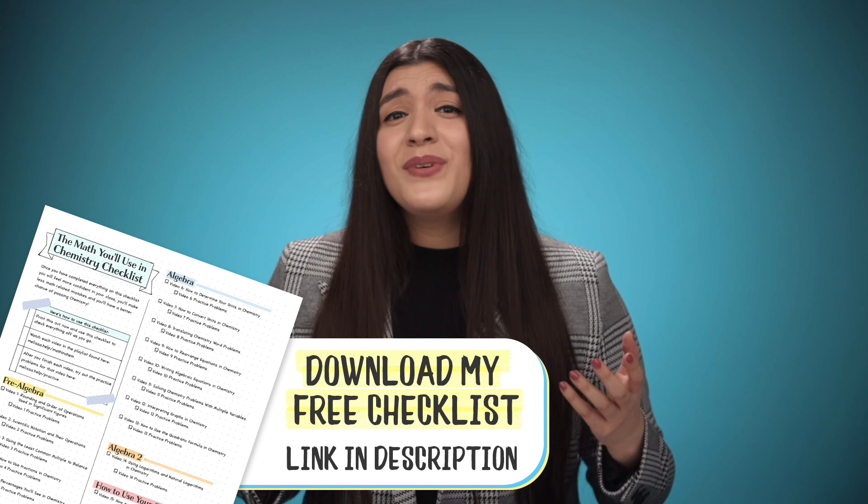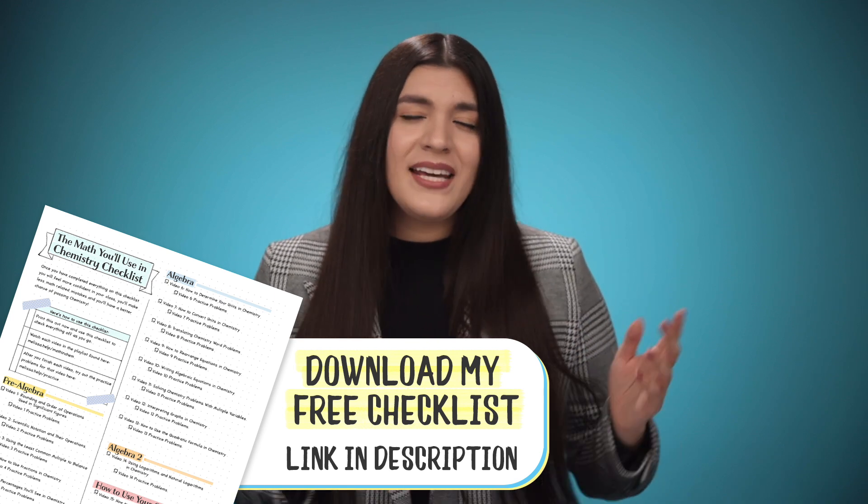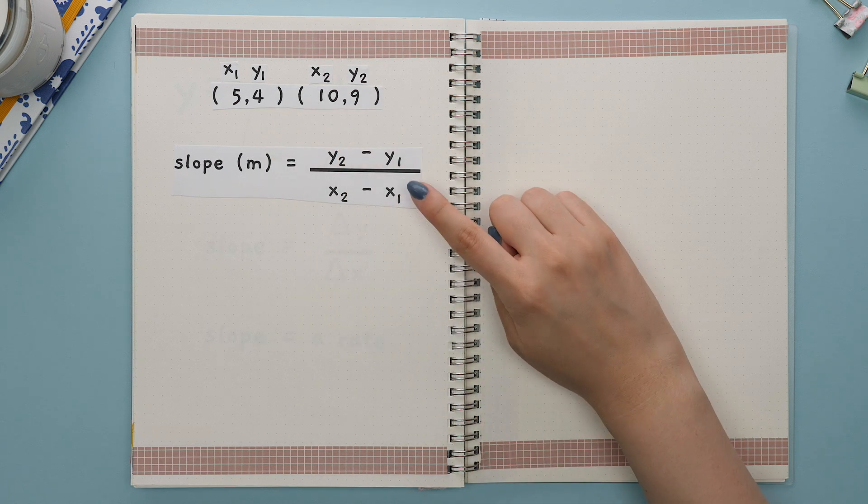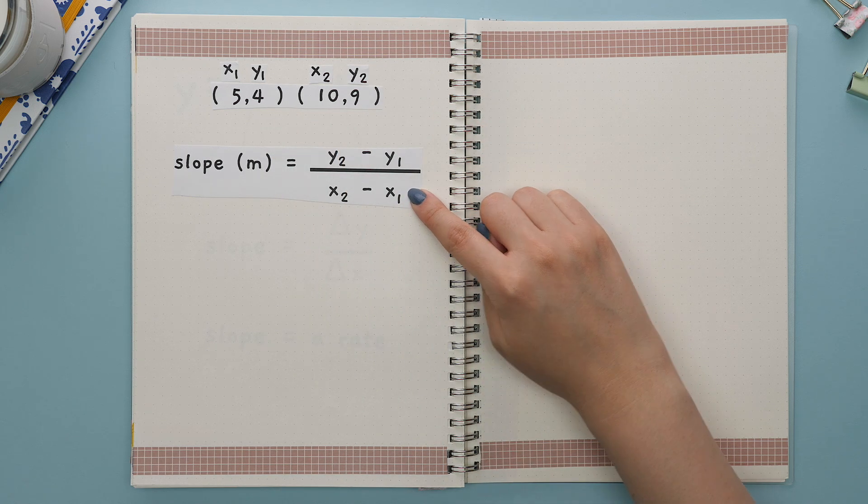The slope is very useful because it will help you determine any unknown values. If you needed to find the slope from two points, you would use this formula.